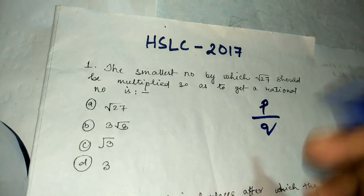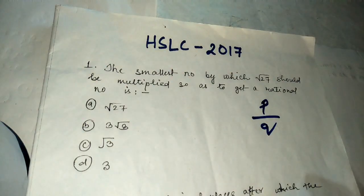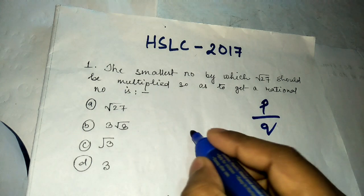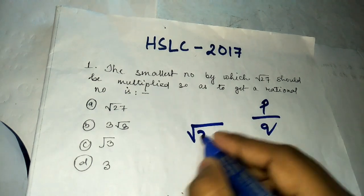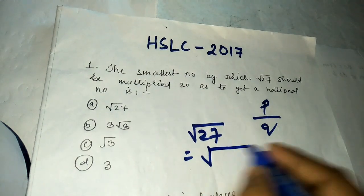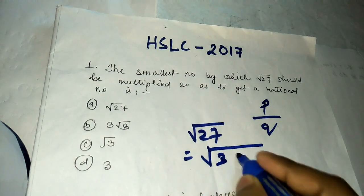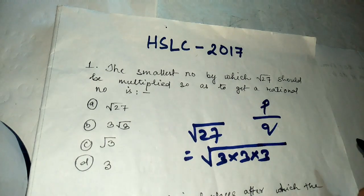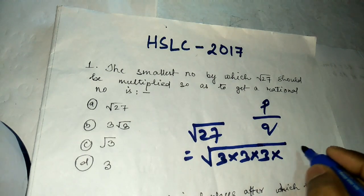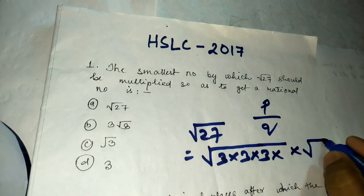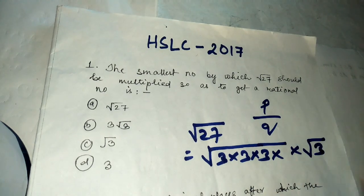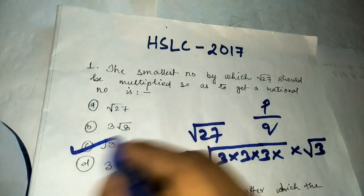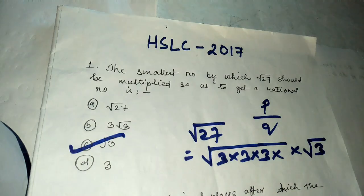Write root 27 — if you express it, you get 3 × 3 × 3. To make it a perfect group, you multiply by root 3. So root 27 × root 3 gives a rational number. The answer is root 3.